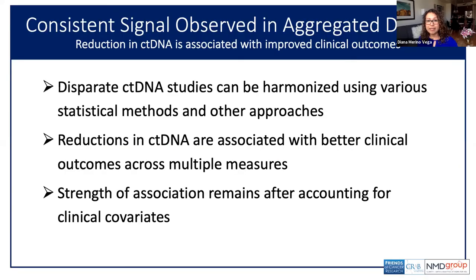Step one of this project achieved all of its milestones and produced some very promising results. Through careful and strategic harmonization strategies, we have shown that disparate CT-DNA datasets can be aggregated and analyzed together. Decreases in CT-DNA were found to be associated with better clinical outcomes in multiple analyses, including overall progression-free survival, durable clinical benefit defined as progression-free survival greater than six months, and tumor response defined as partial response or better. Interestingly, we did not find evidence that baseline CT-DNA values were predictive of clinical outcomes, implying that the change in CT-DNA from baseline is a stronger indicator of response to treatment. Finally, these associations remained even after accounting for cohort-specific differences in other clinical covariates.